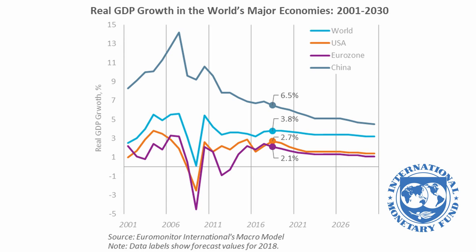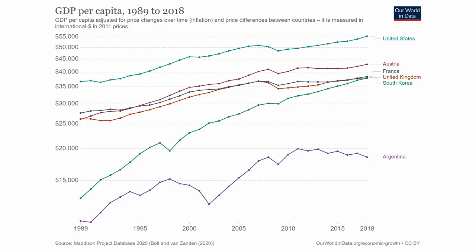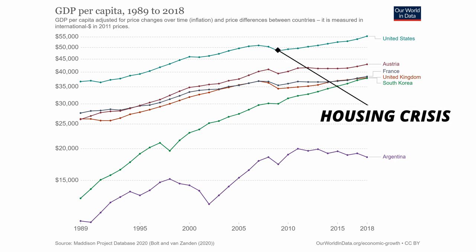This sense of interdependence and globalization does come with drawbacks. Because countries are so connected with one another, when a big institution or country experiences a debt crisis — like we saw in the United States with the 2008 housing crisis — other countries can experience the same, as shown in the graph above. Notice how every other country's GDP was affected by the United States' failure to manage their banking practices.